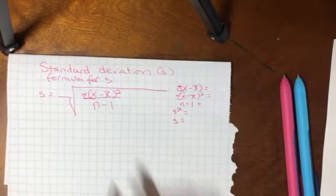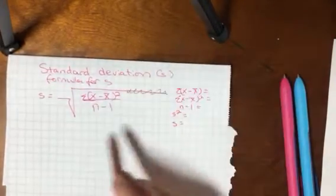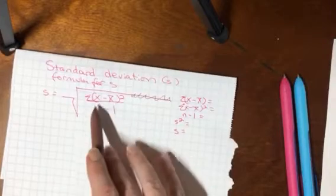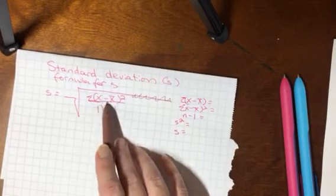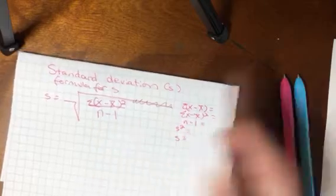So here's the formula for the standard deviation. It's the square root of the sum of each x value minus the mean squared over n minus one.